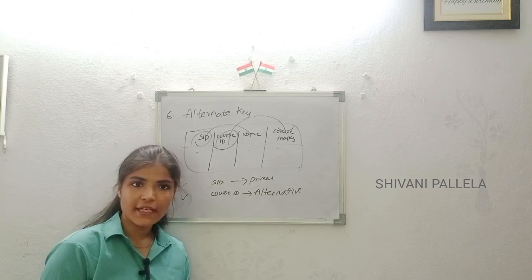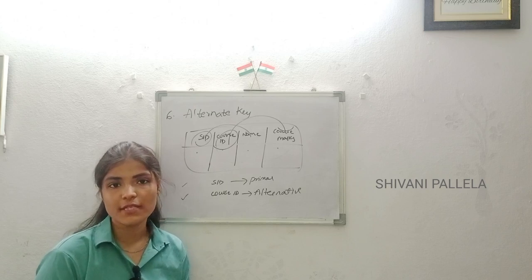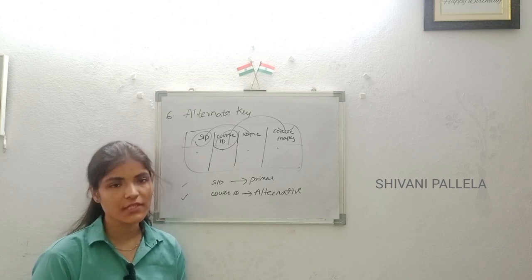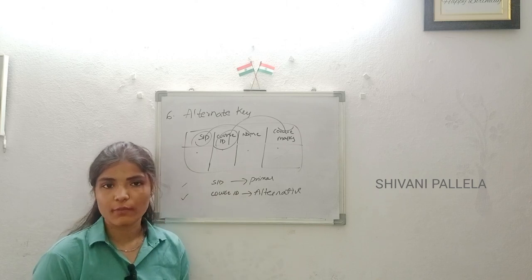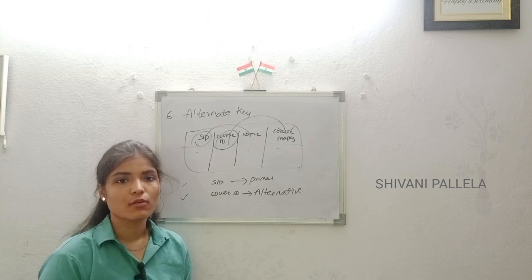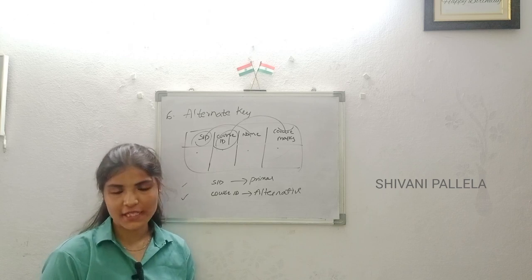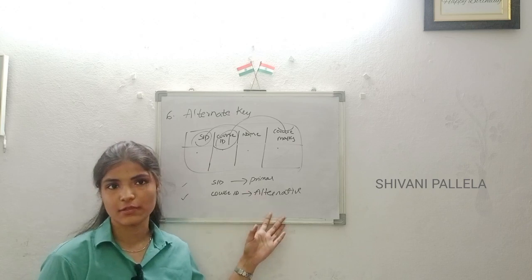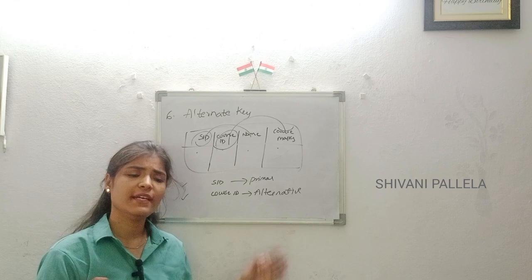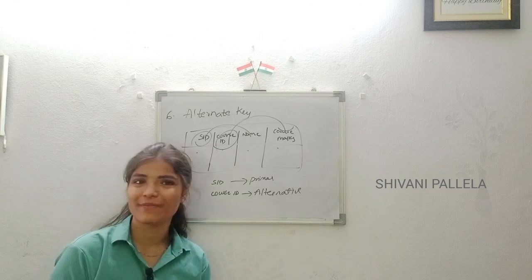So the types of keys are: primary key, foreign key, super key, candidate key, composite key, and alternate key — six types of keys in RDBMS. If you understand these key concepts, you will understand normalization very easily. If you like this video, please like, share, and subscribe to the channel. In upcoming videos we will discuss the normalization topic. See you in the next video, bye.